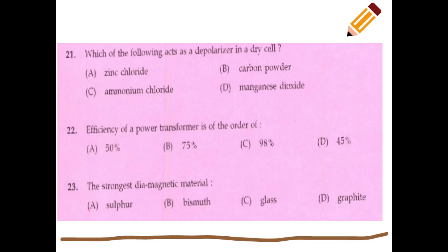Next question: which of the following acts as a depolarizer in a dry cell? The answer is manganese dioxide. It is the depolarizer in the dry cell.